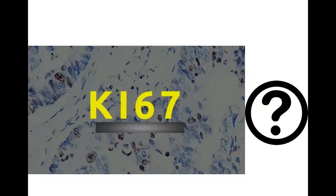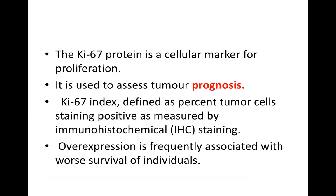KI-67 is a protein that is a cellular marker for proliferation, used to assess tumor prognosis. The KI-67 index is defined as the percent of tumor cells staining positive by immunohistochemistry. Its overexpression is frequently associated with the worst prognosis. That's all for today — I hope you liked the video. Thank you very much, see you next time.